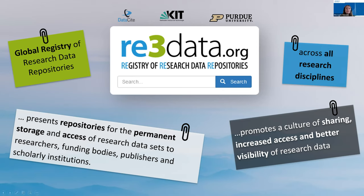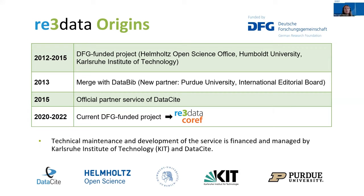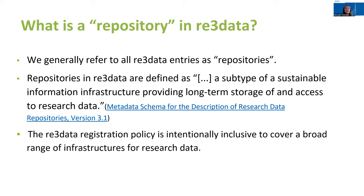Re3Data started as a project funded by the German Research Foundation, involving Humboldt University, Karlsruhe Institute of Technology, and the Helmut Open Science Office. It merged with DataBib in 2013, a similar repository registry located at Purdue University in the US. Since 2015, it's a DataCite partner service chaired by the Karlsruhe Institute of Technology and Purdue. In 2020, the current project Re3Data CAREF started again with funding from the DFG. According to our schema documentation, a repository is defined as a subtype of sustainable information infrastructure providing long-term storage of and access to research data.